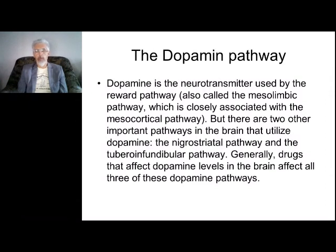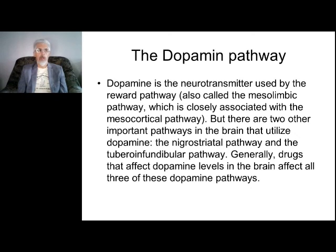The dopaminergic pathways include the mesolimbic pathway and the mesocortical pathway. These pathways have a very high role in behavior, reward, delusions, and hallucinations. The other two pathways are the tuberoinfundibular pathway and the nigrostriatal pathway. The nigrostriatal pathway has a very important role in motor activity; the tuberoinfundibular pathway has an important role in releasing hormones. Together they form a bridge between mental processes, cognitions, hormones, and motor activity.